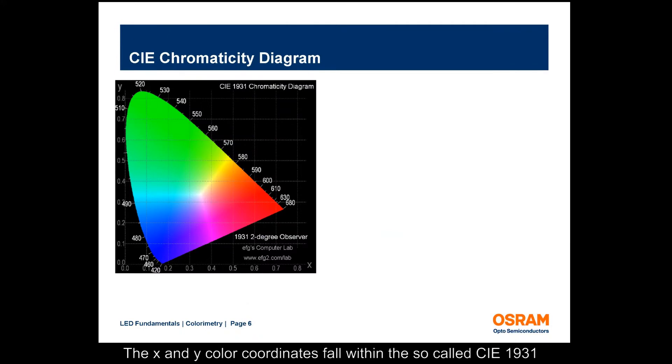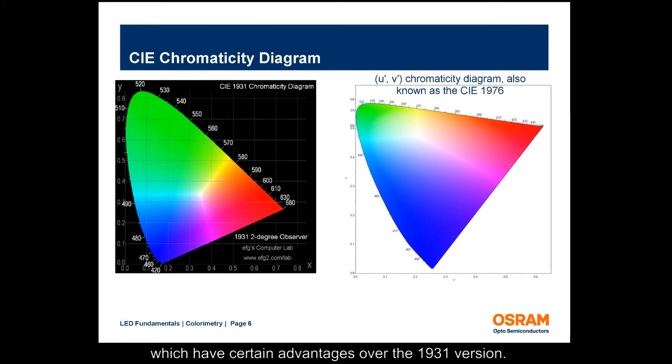The x and y color coordinates fall within the so-called CIE 1931 chromaticity diagram. Other diagrams have since been calculated, which have certain advantages over the 1931 version. However, the older version is the most commonly used.